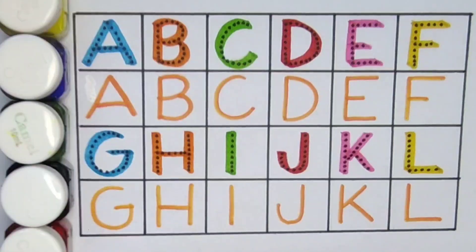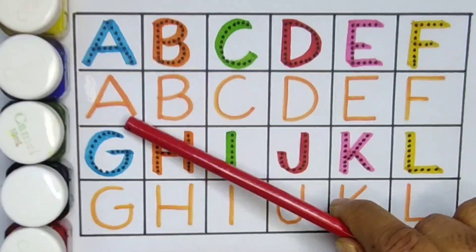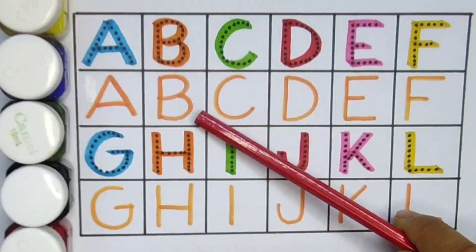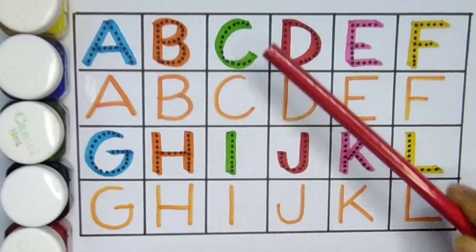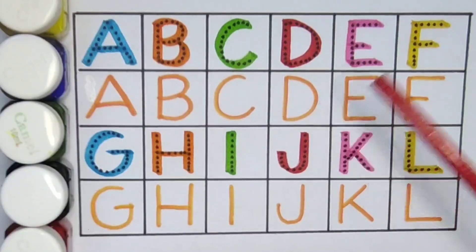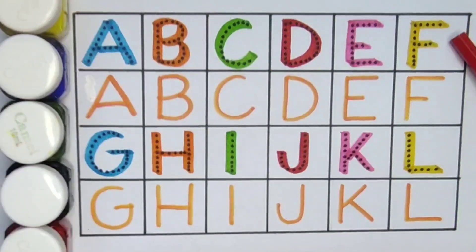What we learn? We learn A for airplane, A for ant, B for bed, B for book, C for cow, C for carrot, D for duck, D for dolphin, E for egg, E for eye, F for flower, F for fish.